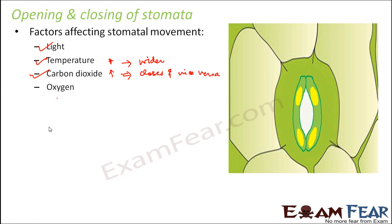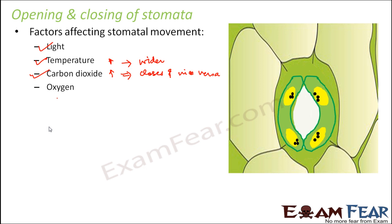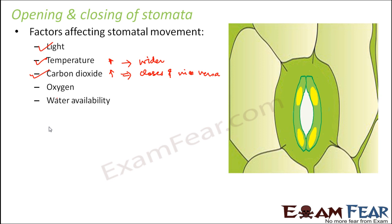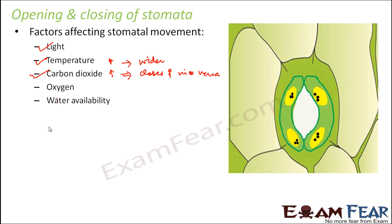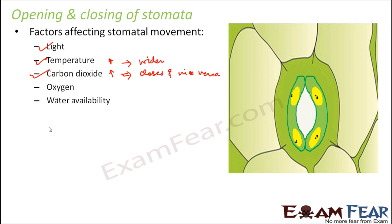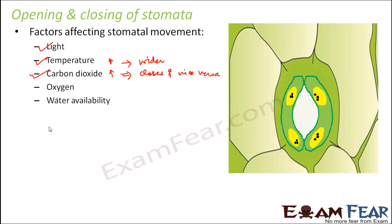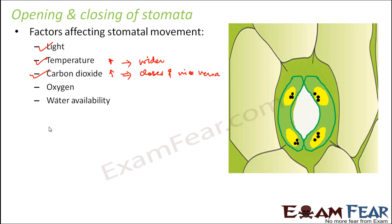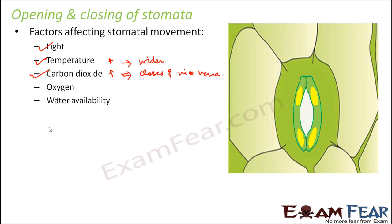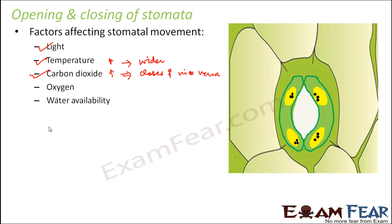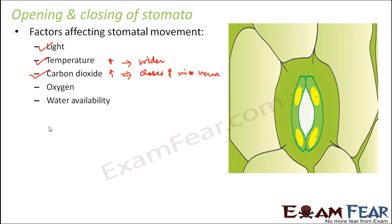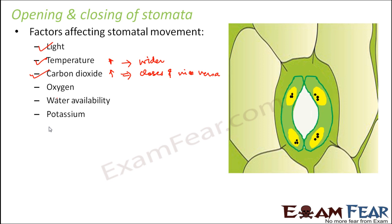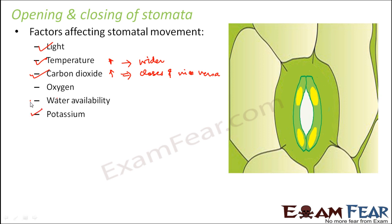Oxygen is also essential for stomatal opening — without it, the stomata cannot open. Regarding water availability: when less water is available to the plant, combined with a high transpiration rate, the stomata tends to close. This prevents excessive water loss and dehydration. If the stomata is closed, water cannot move out and the plant preserves its water. Finally, potassium ion concentration directly impacts the opening and closing of stomata, as explained.